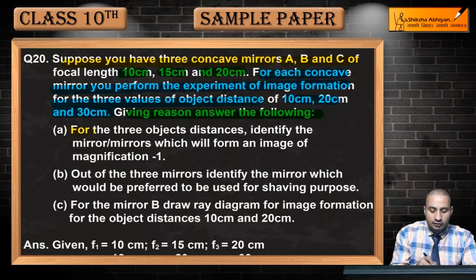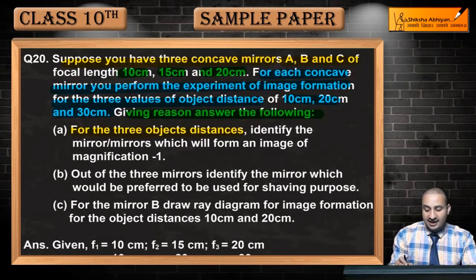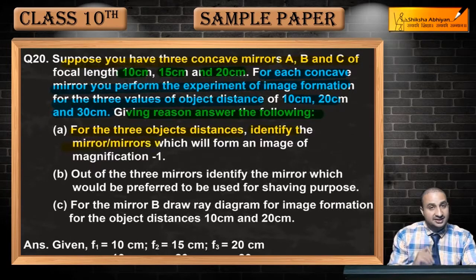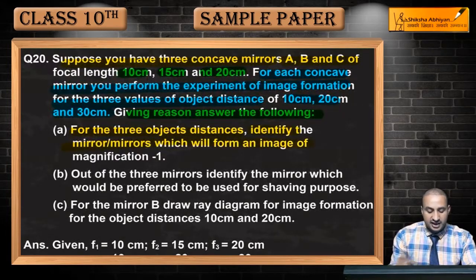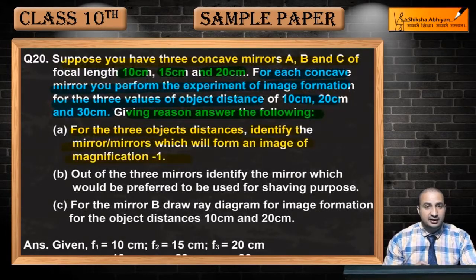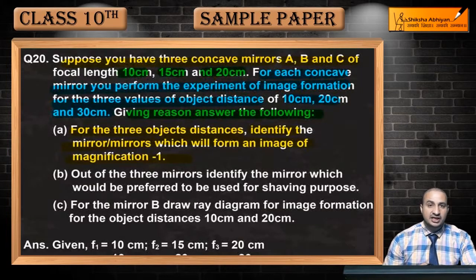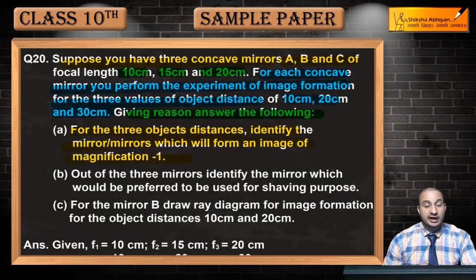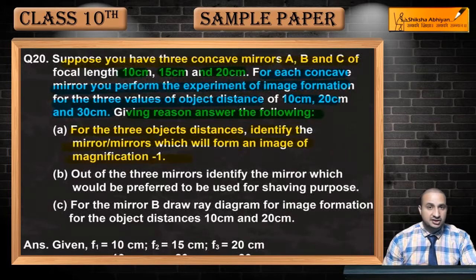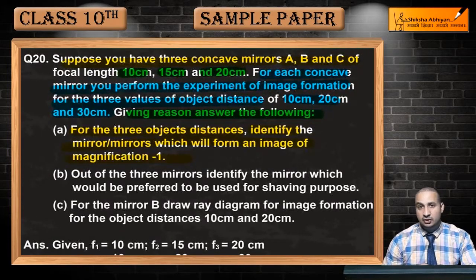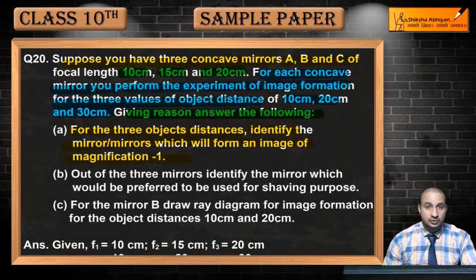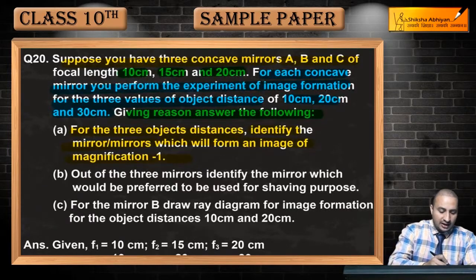To first jo question yahaan par ask kiya ja raha hai, part A mein wo hai: for the three object distances identify the mirror or mirrors which will form an image of magnification minus one. Minus one magnification image banane waale kaun se mirrors hongi, A, B, C mein se kaun hongi ya ek se zyada hain.